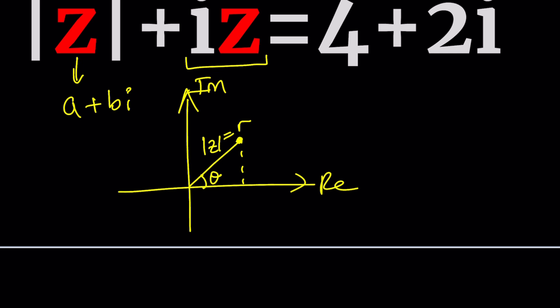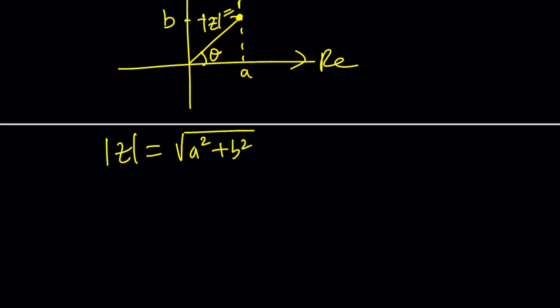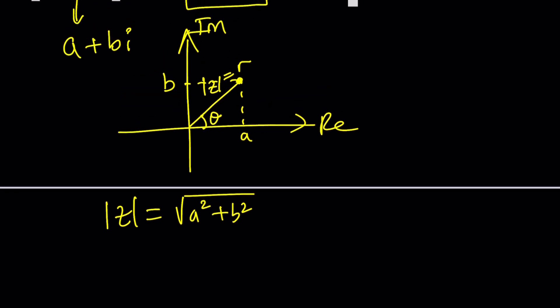So let's go ahead and replace z with a plus bi. Oh I was going to talk about the absolute value. If the real part is a and the imaginary part is b, then the absolute value from Pythagorean theorem is the square root of a squared plus b squared. Now we're going to plug this into our equation and solve the problem.